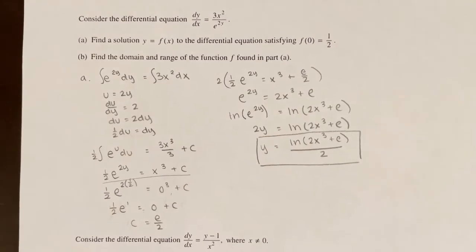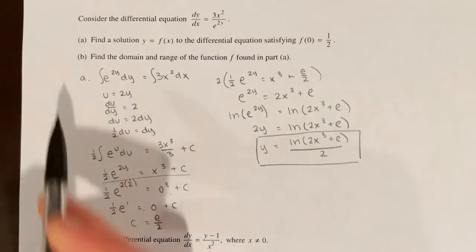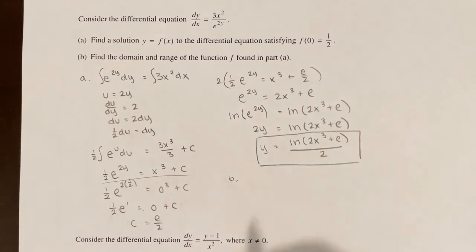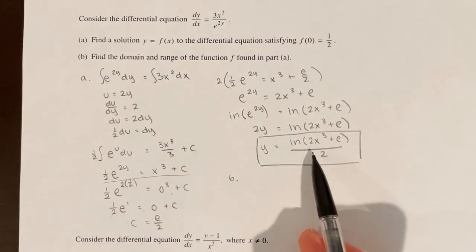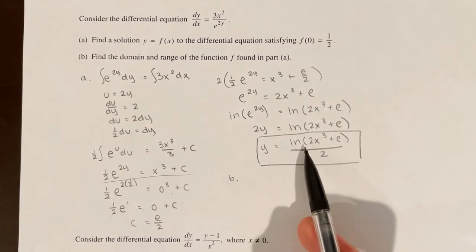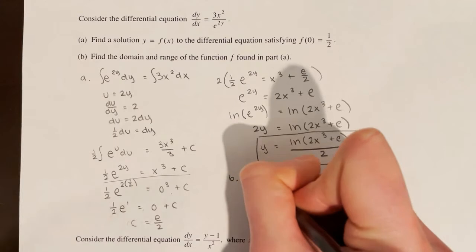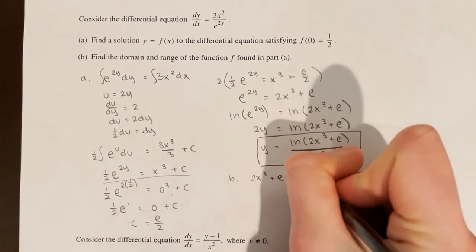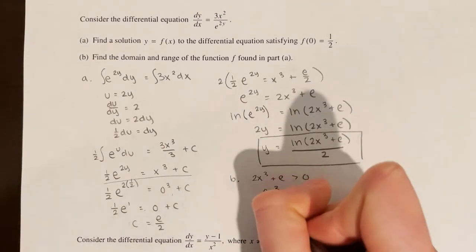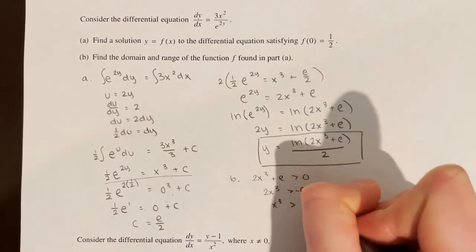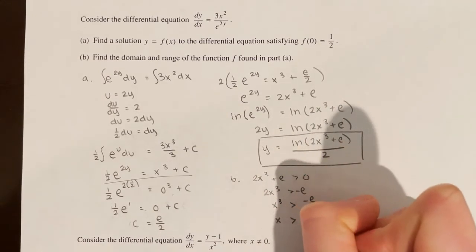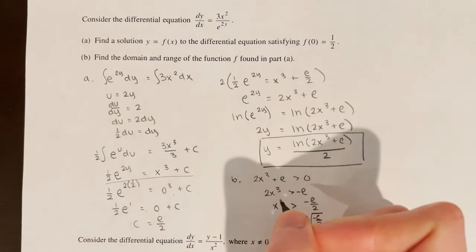Part B asks for the domain and range of the function found in Part A. For the domain, I cannot take the natural log of a number ≤ 0, so 2x³ + e > 0. Solving: x³ > -e/2, so x > ∛(-e/2). That is the domain restriction.